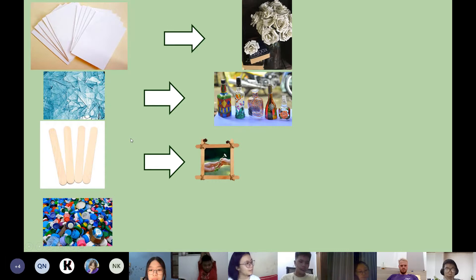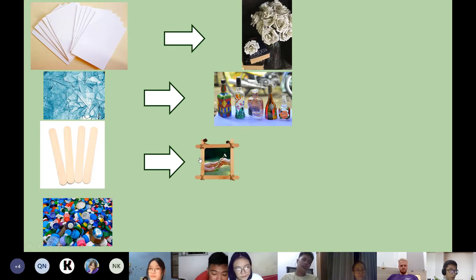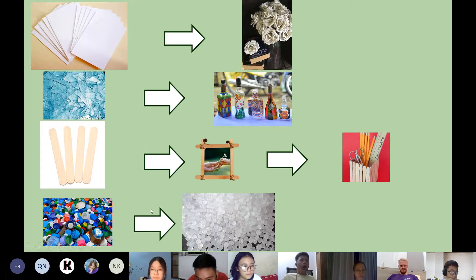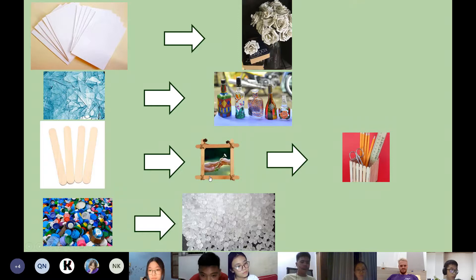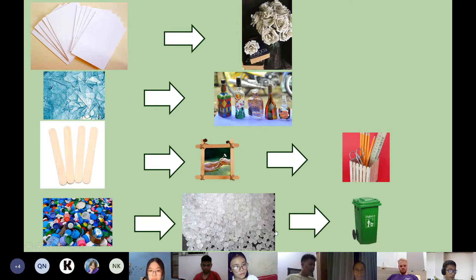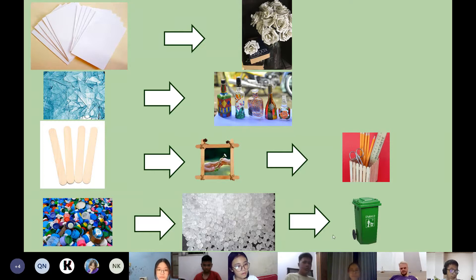Wooden ice cream sticks have lots of ways to be recycled. For example, we can use some glue to attach them and make a pen holder, folder, or picture frame. The plastic we use every day also has a very interesting way to be recycled. They will be cleaned, crushed, and cut into plastic particles called recycled plastic pellets, then processed and made into all kinds of plastic products.